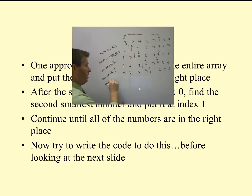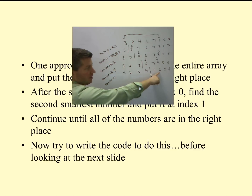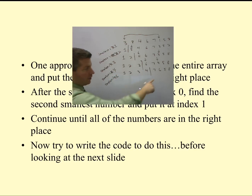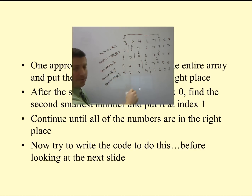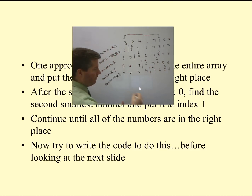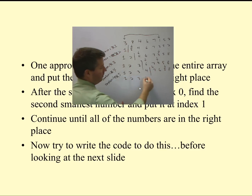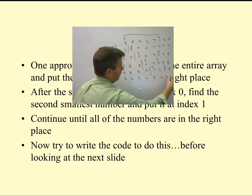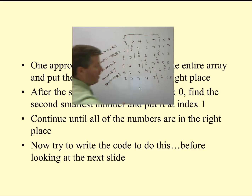Continuing, our smallest number starts off at 7. 7 is not less than 6, so we update smallest to be 6. 6 is not less than 5, so we update smallest to be 5. 5 is less than 8, so we swap 5 and 7. We get 1, 2, 3, 4, 5, 6, 7, 8, and we know that many numbers are in the right place.